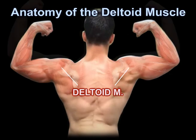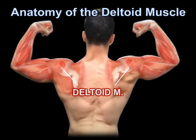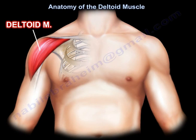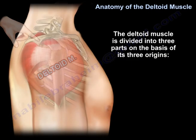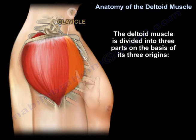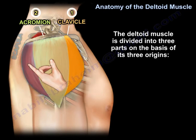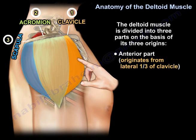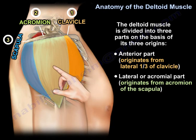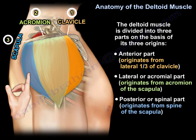Anatomy of the deltoid muscle. The deltoid muscle is divided into three parts on the basis of its three origins. The anterior part originates from the lateral one-third of the clavicle. The lateral part, or the acromial part, originates from the acromion of the scapula. The posterior part, or the spinal part, originates from the spine of the scapula.